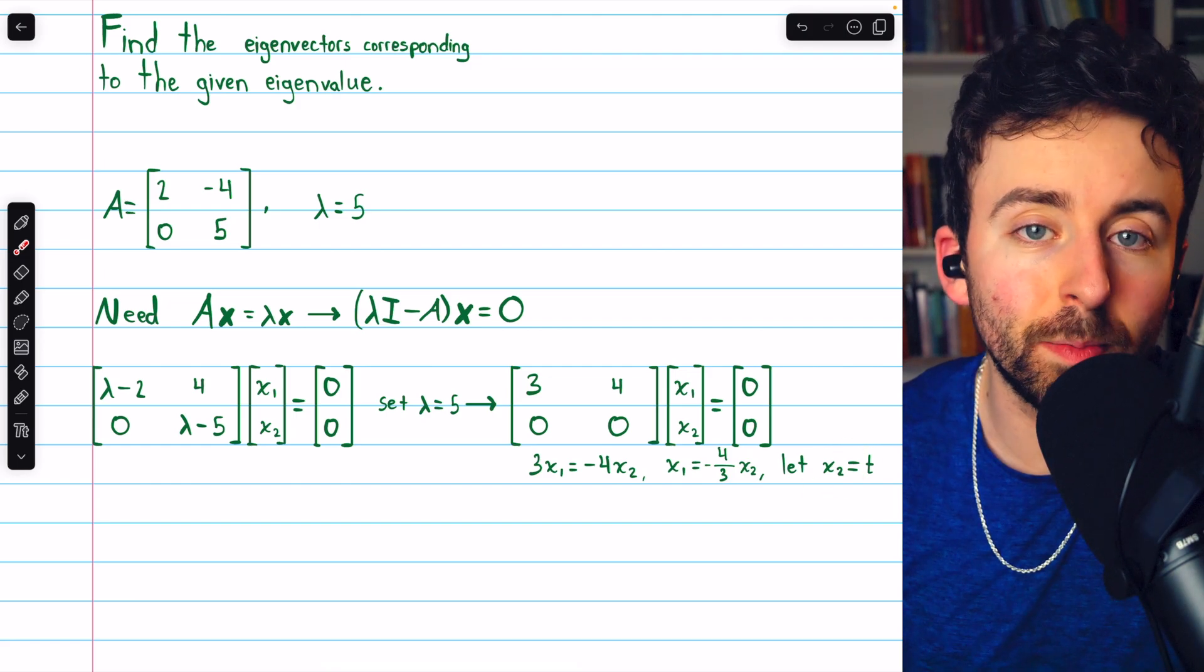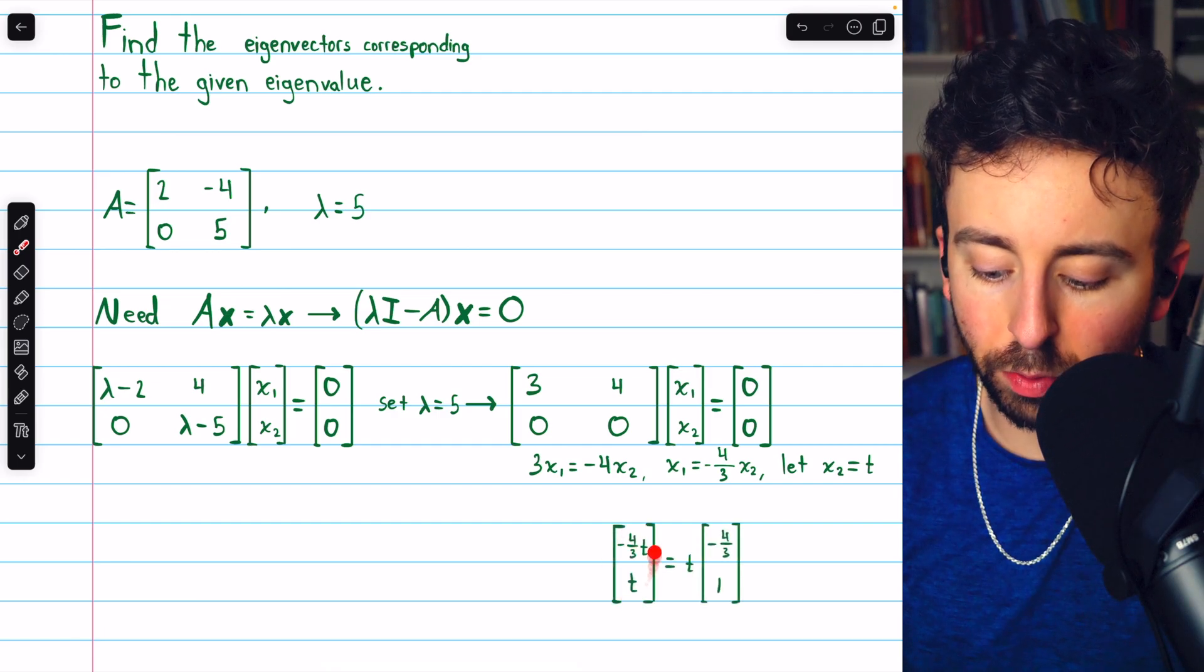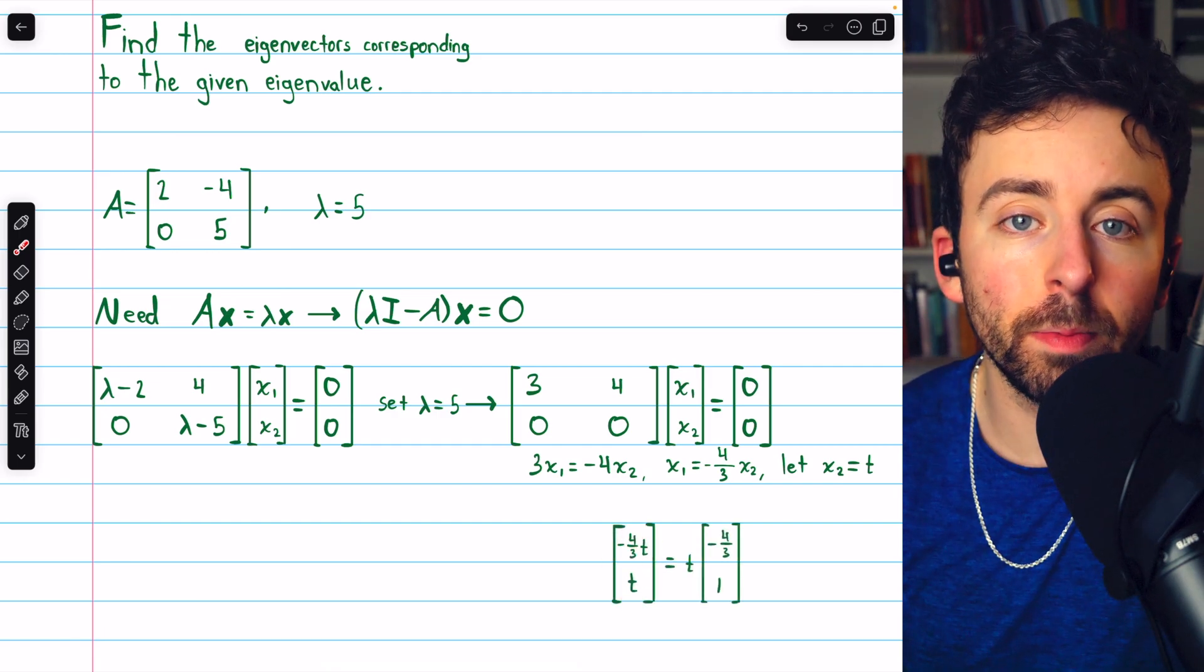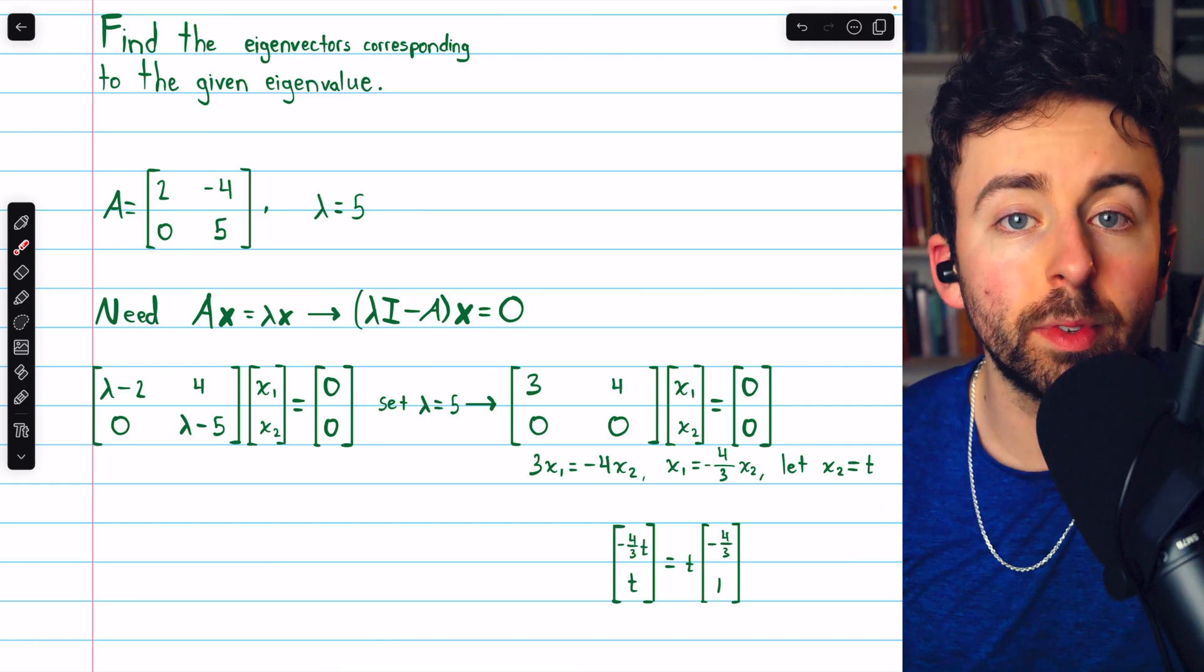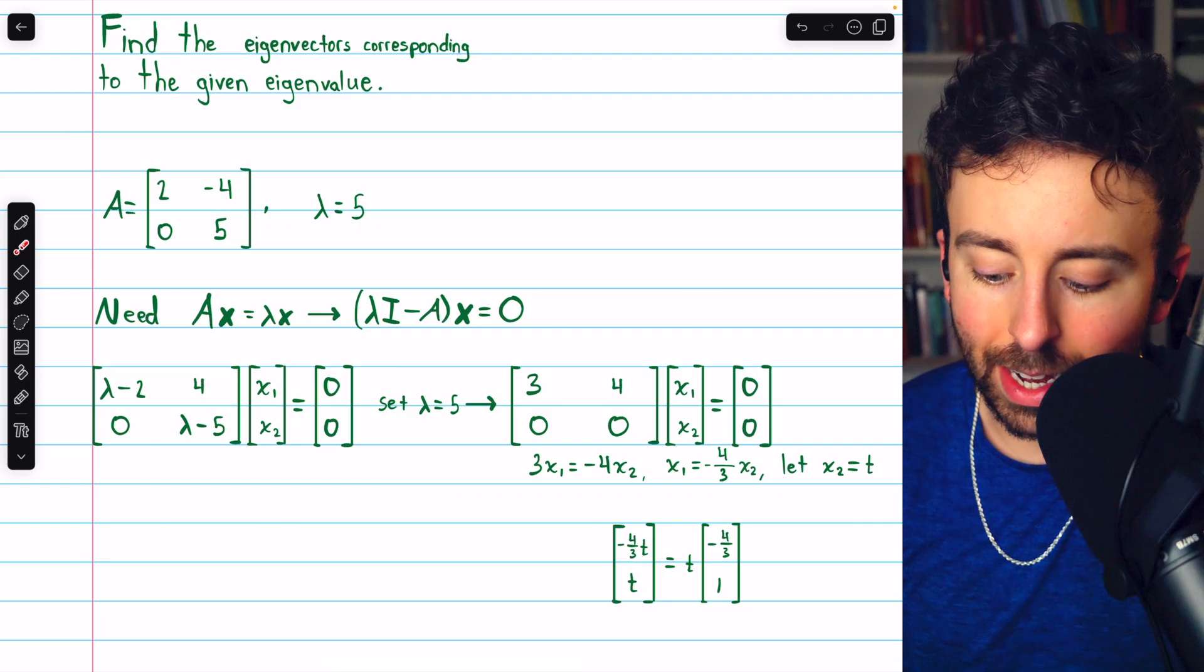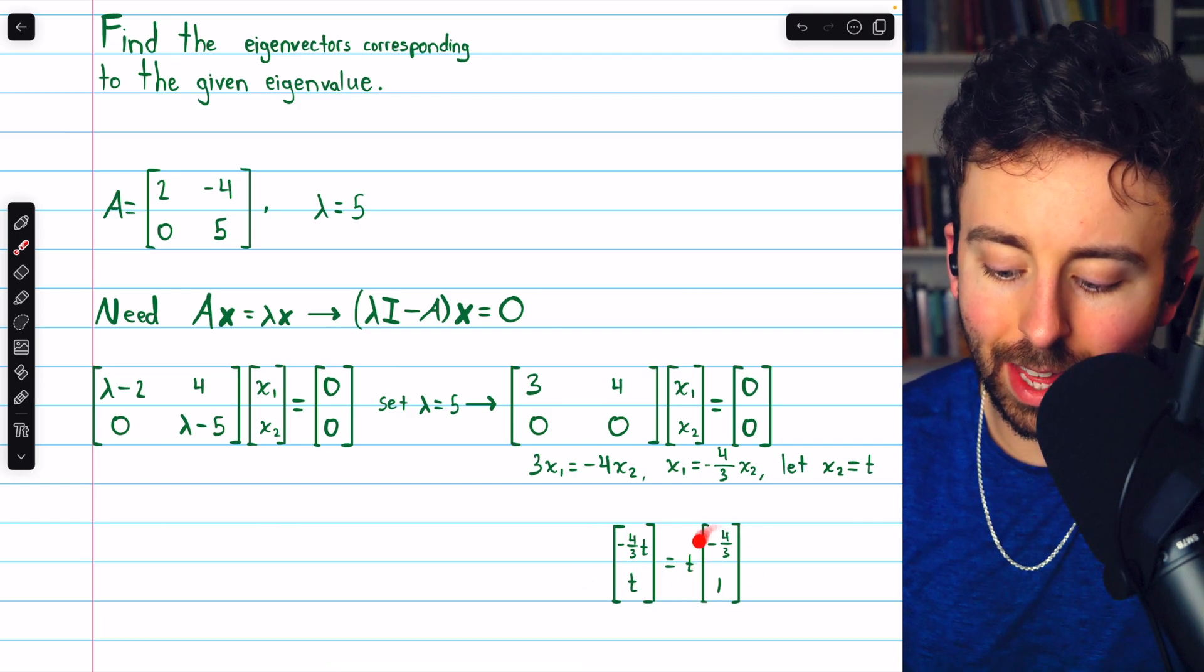But then letting x2 equal t, we can express the arbitrary solution vector in terms of t. So any non-zero vector of this form will be an eigenvector. Any vector where the first entry is negative four thirds times the second entry. We can then take the parameter t out to write it like this.